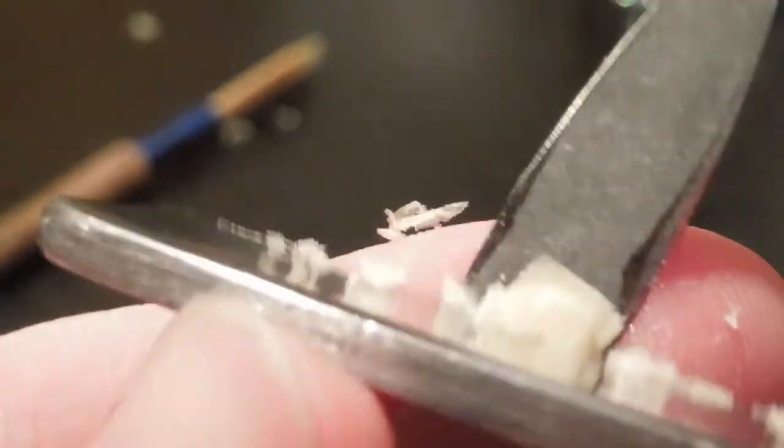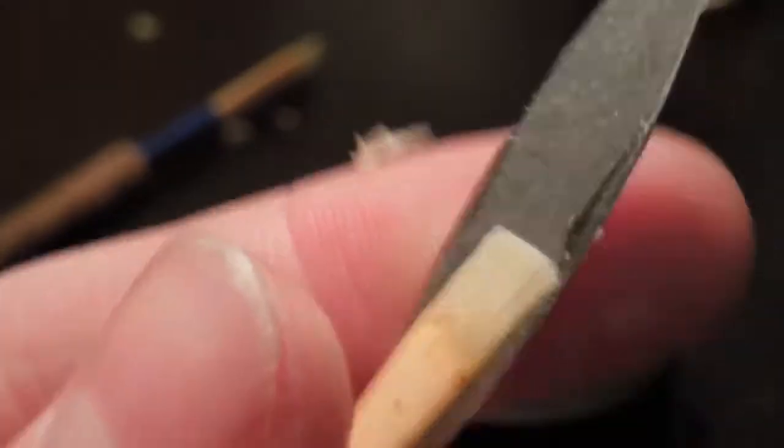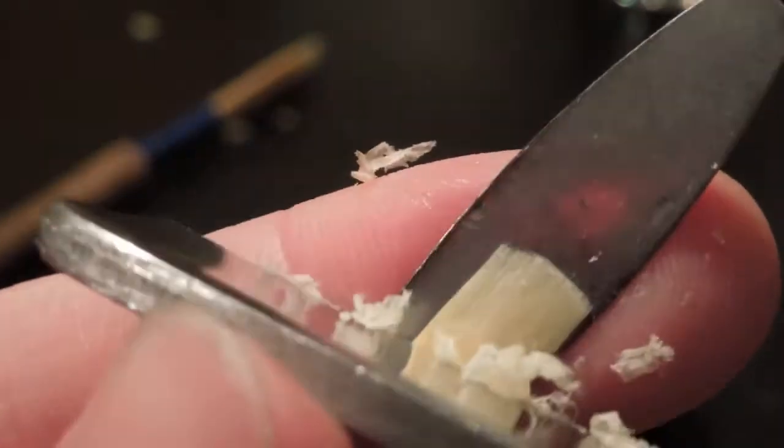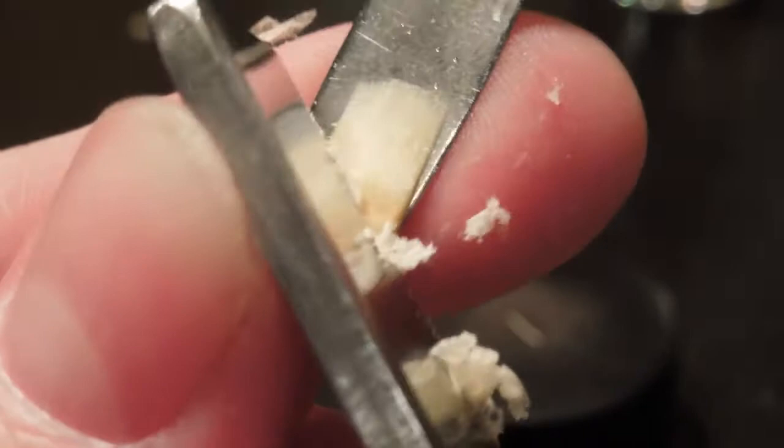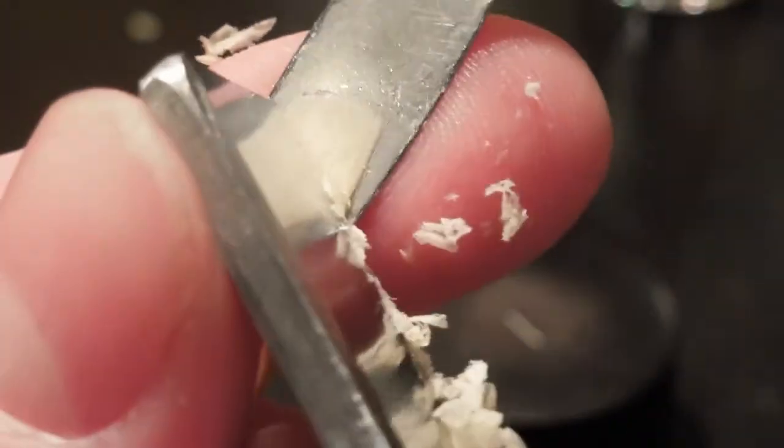Because once the tip vibrates the way it should, the rest of the reed is really not a problem. It just kind of falls into place. But if the tip isn't vibrating right, you're kind of paddling upstream.